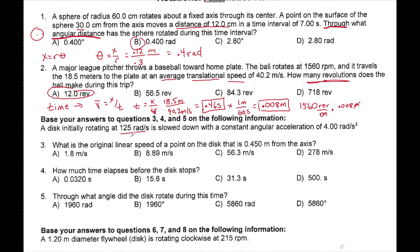This gives omega naught — it slowed down, so alpha equals minus 4 rads per second squared. They want to know the linear speed, which equals r times omega naught. R is 0.5 meters and omega naught is 125 rads per second, so 125 times 0.45 meters gives 56.3 meters per second.